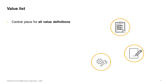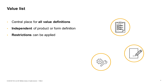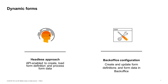Value Lists. Value lists are envisioned as a central place for values which are selectable, like drop-downs, or displayed to customers on the UI. Values are independent from the product and form definition. They can be linked to the product or form definition, and the restriction concept allows filtering of list items per product. Business users can easily maintain, add, or change value lists using BackOffice by navigating to a separate node under Financial Services.